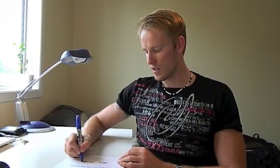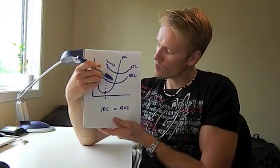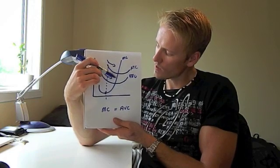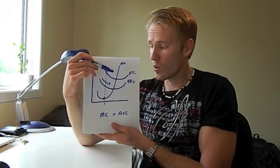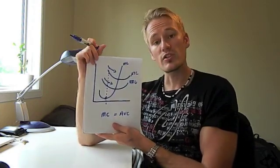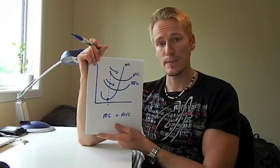Another question students usually get wrong: after MC and AVC are equal, what is happening to average variable cost from there on? When MC equals AVC, they are intersecting, and at that point AVC will be increasing. The same question can be posed for ATC: after MC and ATC are equal, what is happening to ATC? It is increasing.